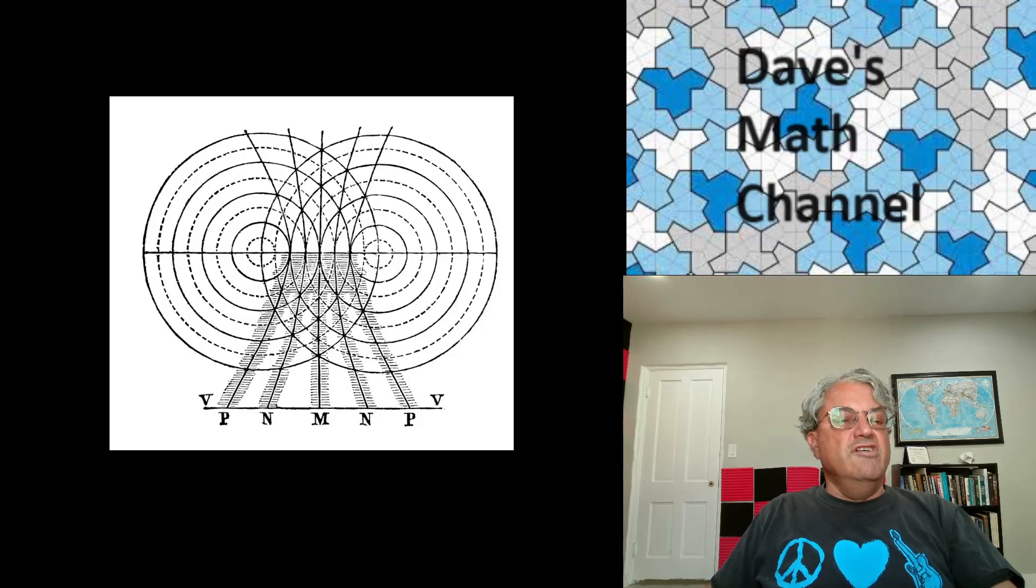And hyperbolas, it turns out that if you have two interfering waves, circular waves, then the places where the waves cancel, you're going to get both constructive and destructive interference from these waves. And it turns out you get constructive and destructive interference along these hyperbolas.